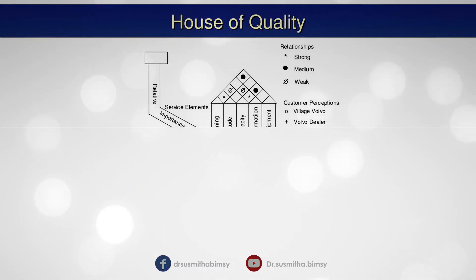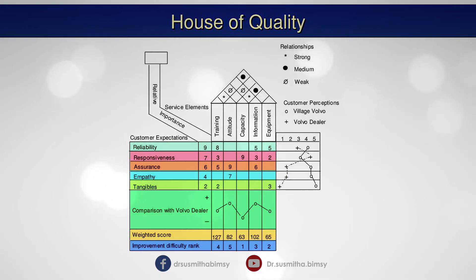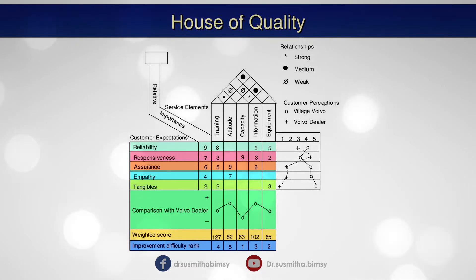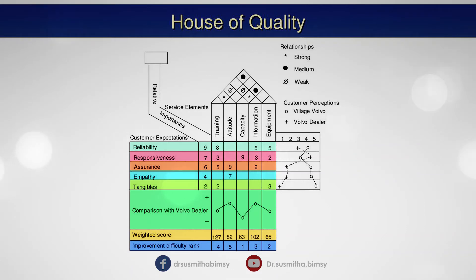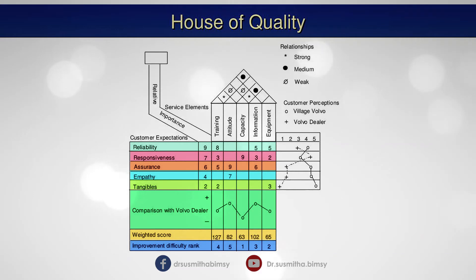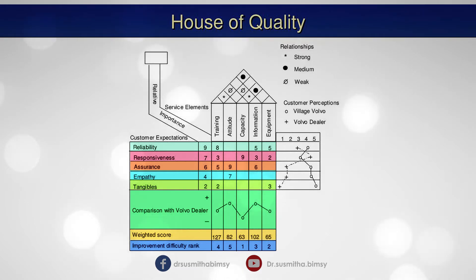Here is an example of QFD applied to Village Volvo — a Volvo service garage — to create a house of service quality. On the far left of the house are listed the customer expectations, which correspond to the five service quality dimensions: reliability, responsiveness, assurance, empathy, and tangibles. Next to each expectation, on the chimney of the house, we list the importance of that particular attribute to customers on a scale from one to nine, with nine being the most important. These importance weights are determined by customer research.